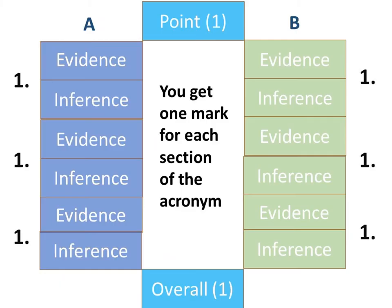So here is how you are going to answer the question — the P, E-I, E-I, E-I, O structure. In my head, I always think of Old MacDonald had a farm, but think of whatever you want if it will help you remember it. This question is out of eight marks. You get one mark for writing a point, one mark for writing an overall statement, and then one mark for every pair of evidence and inference that you write. You should write three for source A and three for source B.